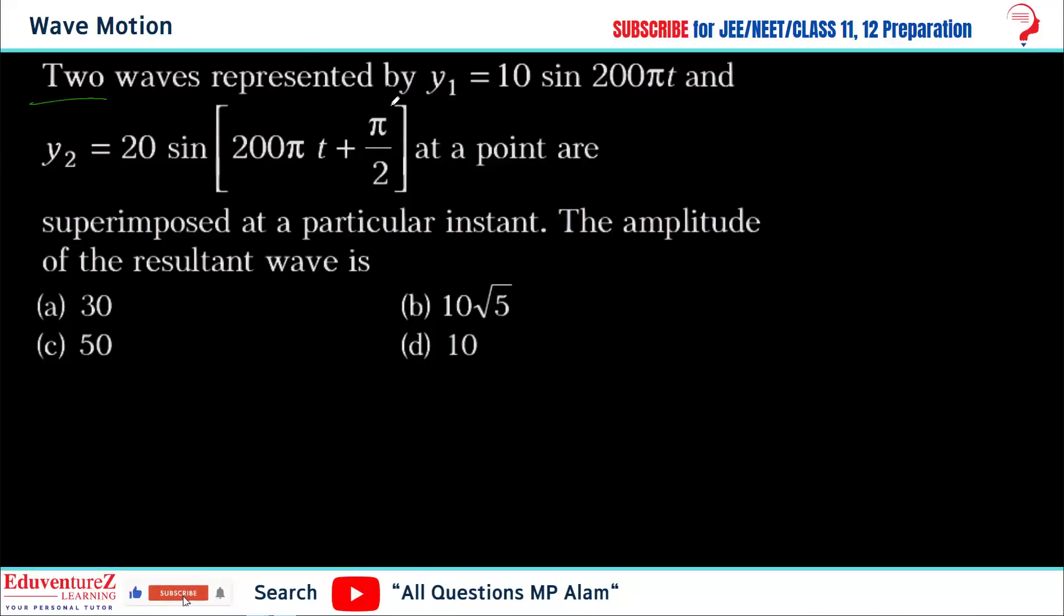This problem asks about two waves represented by the equation y1 equals 10 sin 200πt and y2 equals 20 sin(200πt + π/2) at a point that are superimposed at a particular instant. The amplitude of the resultant wave is...